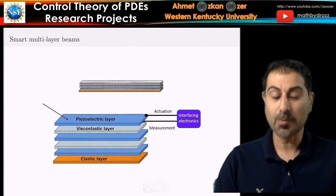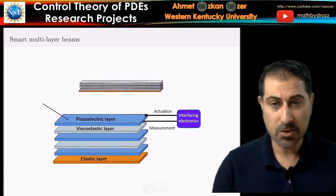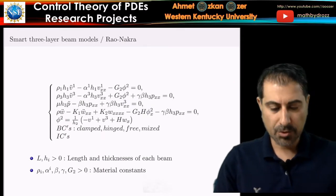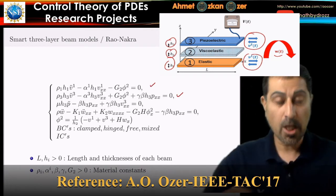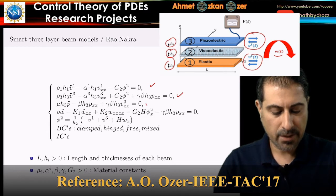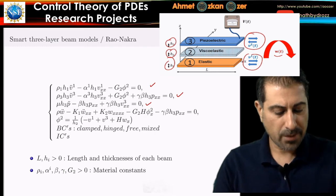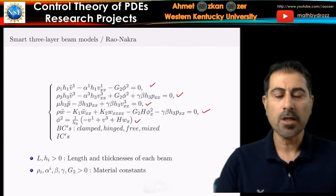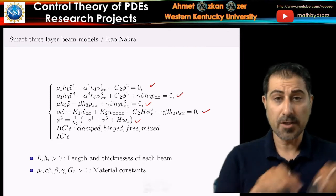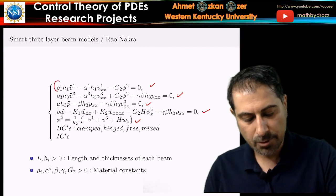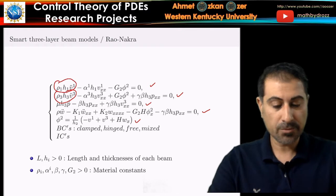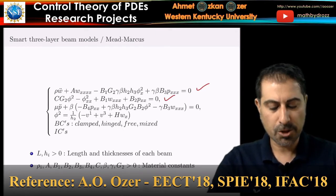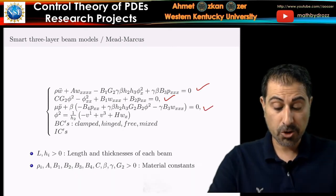Now I'm going to show you models for smart multi-layer beams — where 'smart' means one of the layers is a smart material. The first model is due to Rao-Nacra, with two equations for longitudinal vibrations at the outer layers, a charge equation for the piezoelectric layer, and a bending equation — all coupled through the shear deformation of the middle layer. The next model eliminates the inertia terms for longitudinal motions, reducing to the Mead-Marcus type smart three-layer beam model, with one bending equation, one shear equation, and one charge equation, all coupled.